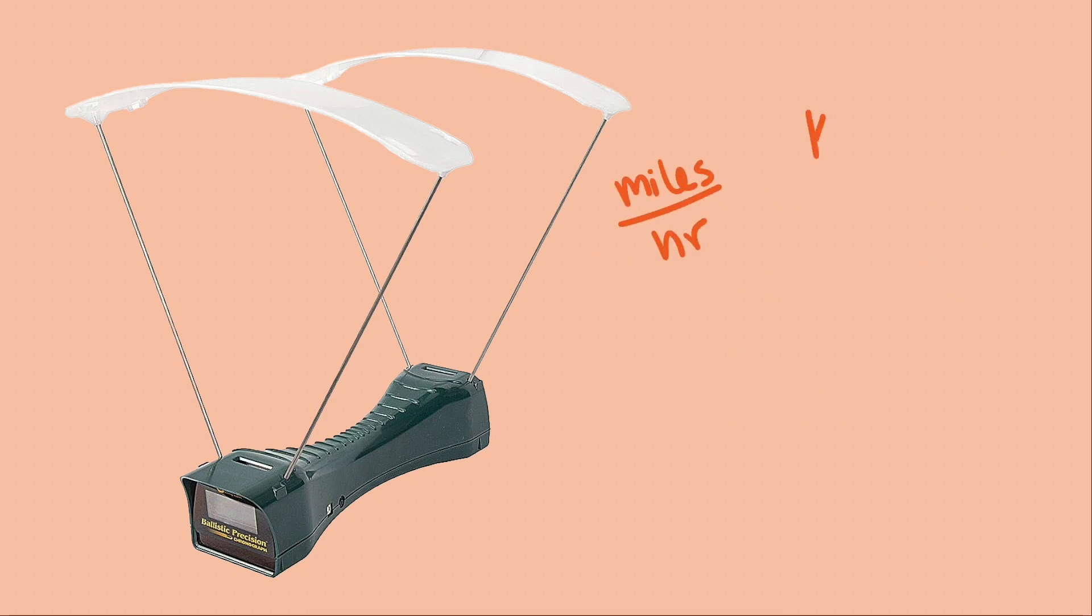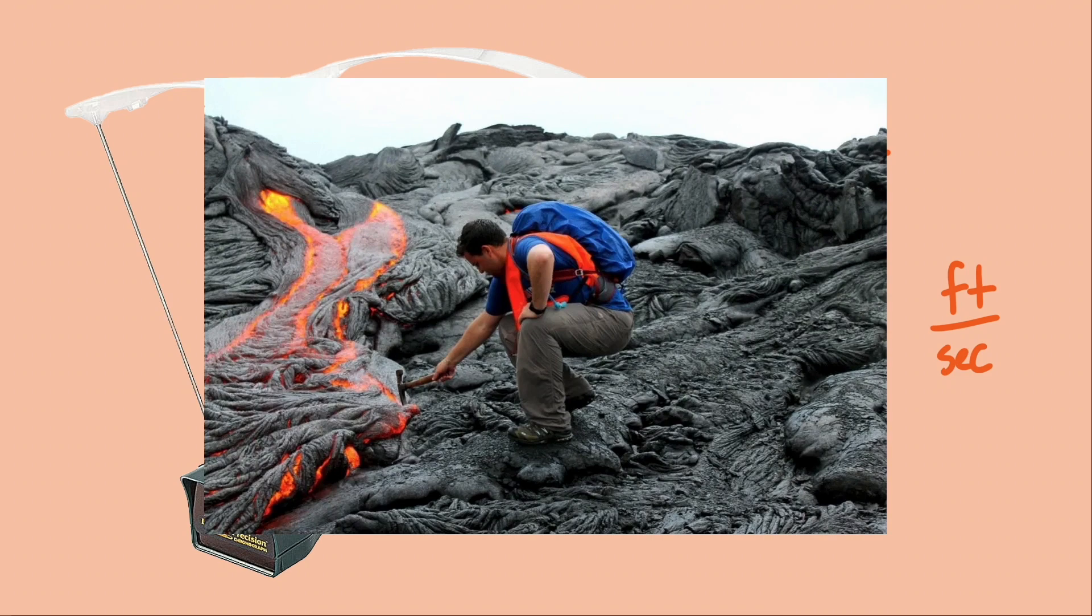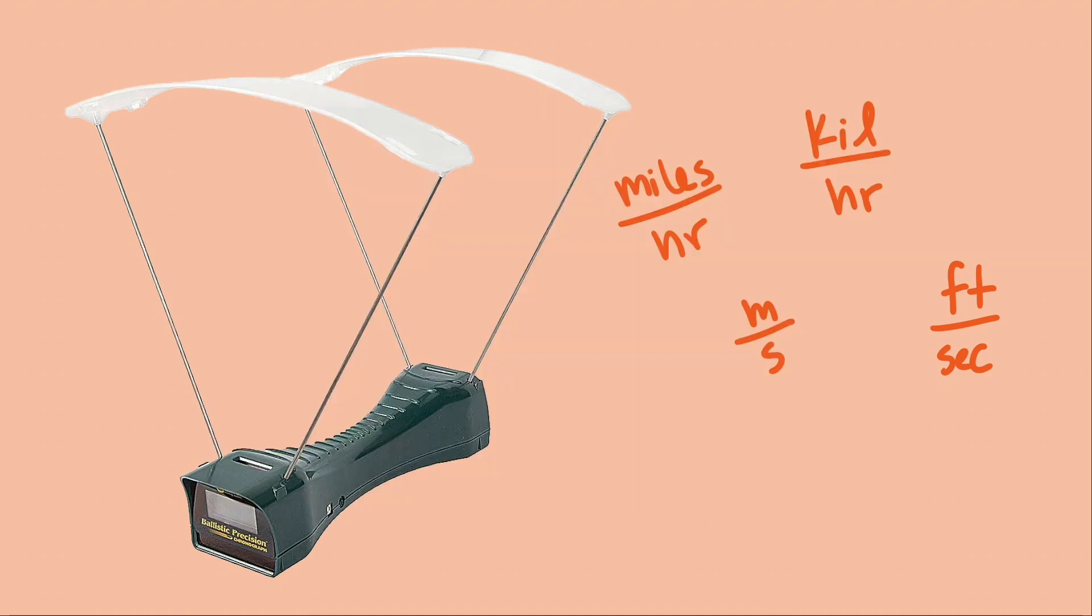Speeds are in units like miles per hour, kilometers per hour, feet per second, meters per second. Or if you're a geologist measuring the speed of tectonic plates, centimeters per year. Each of these units is a distance divided by time. To calculate the speed we need both a change in distance and a change in time.